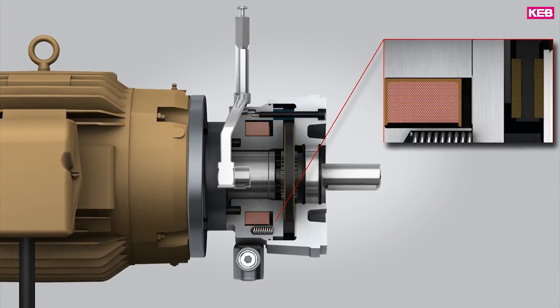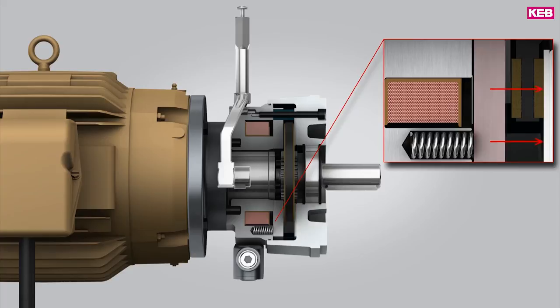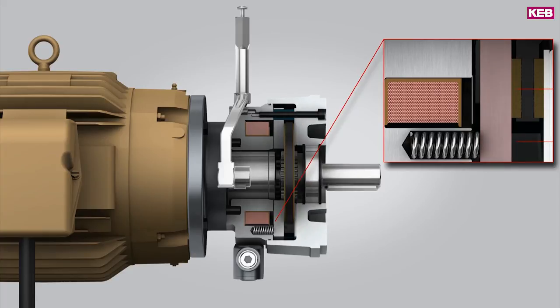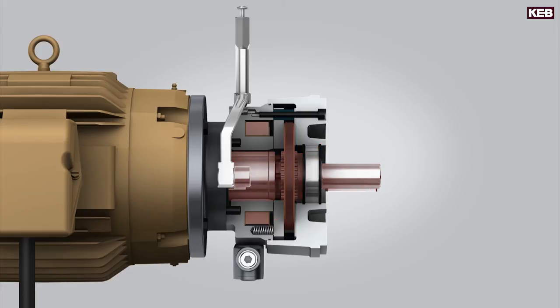When power is released from the coil, the springs push against the armature. The friction lining is then squeezed between the armature and a secondary friction plate, and a brake torque is created.